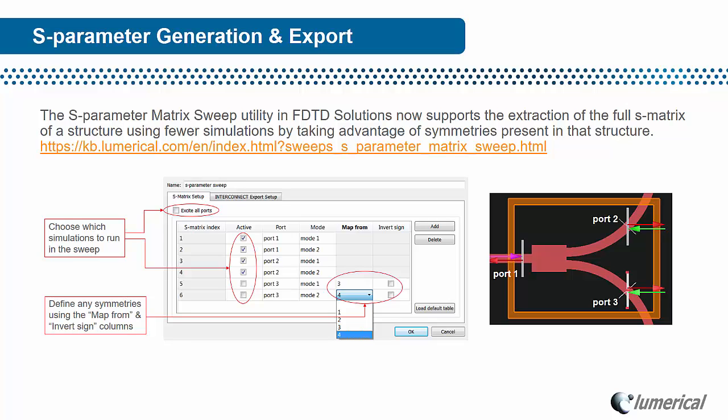For example, to extract the S-parameters for this Y branch, you don't need to excite all the ports since port 2 and port 3 are identical. You can use the table in the utility to indicate which ports are symmetric, and it will automatically run the necessary simulations and collect the results for you correctly.